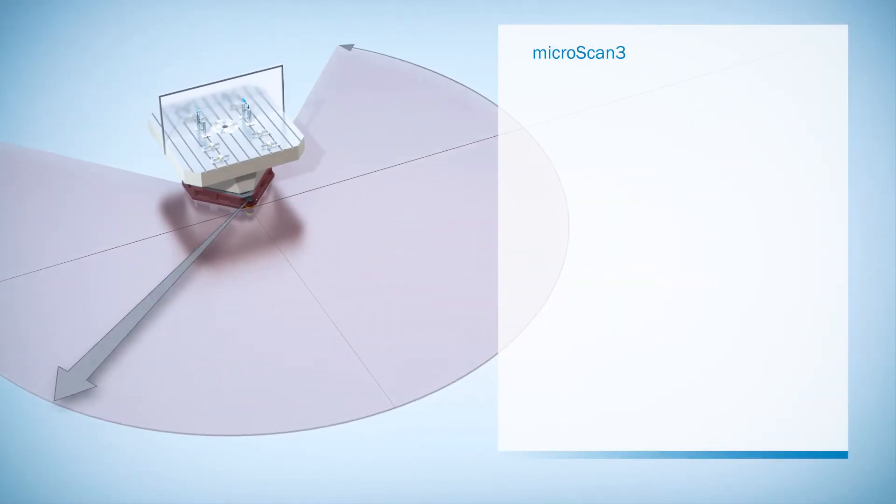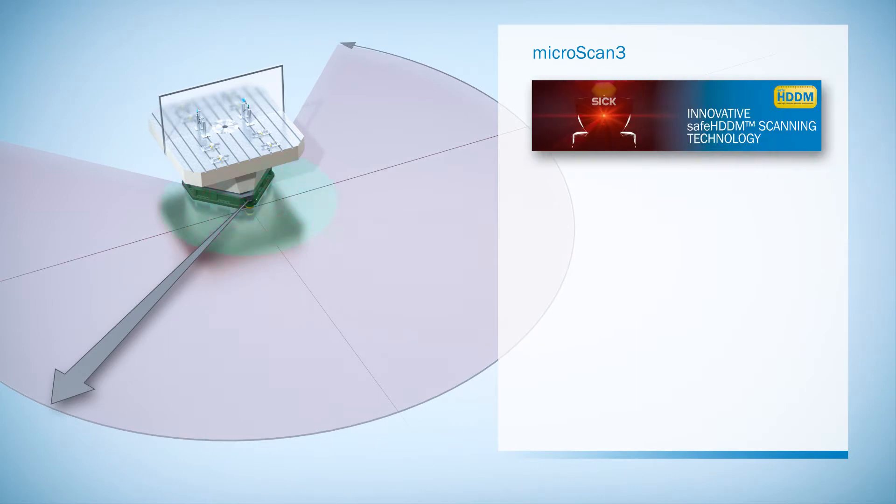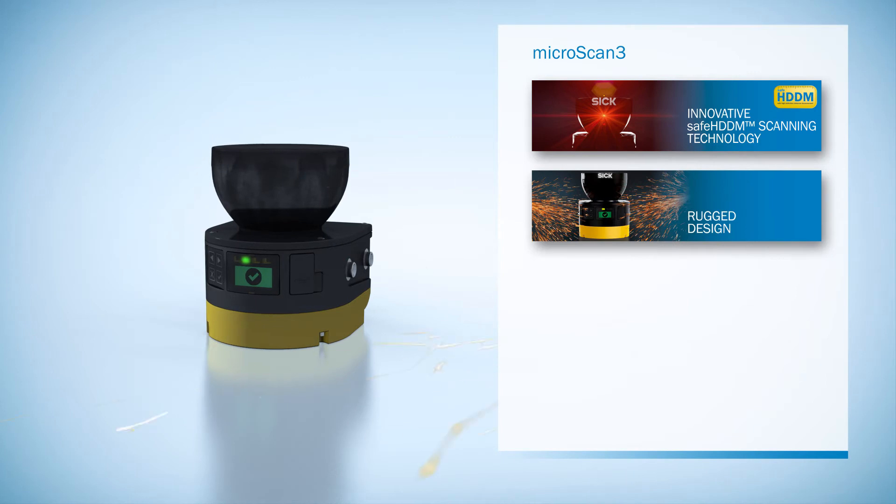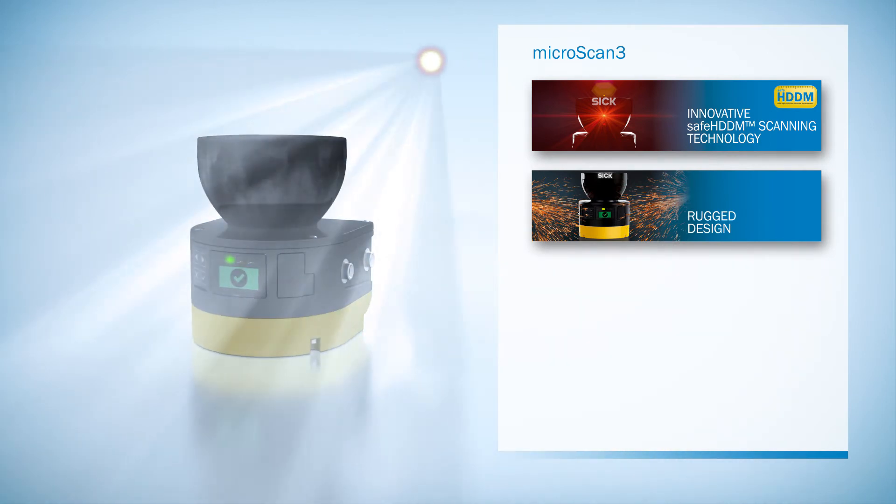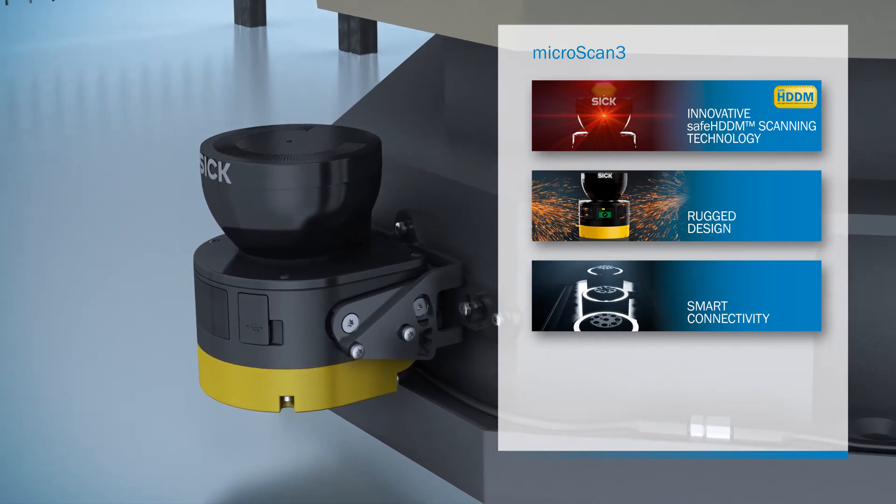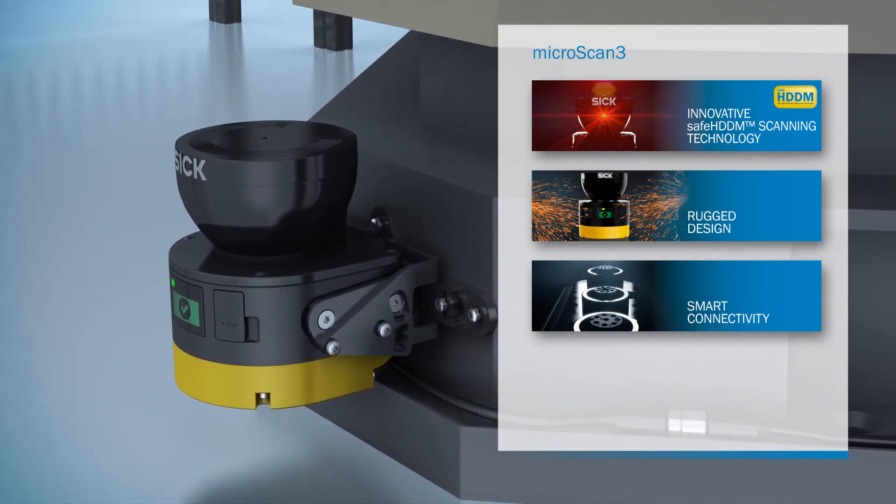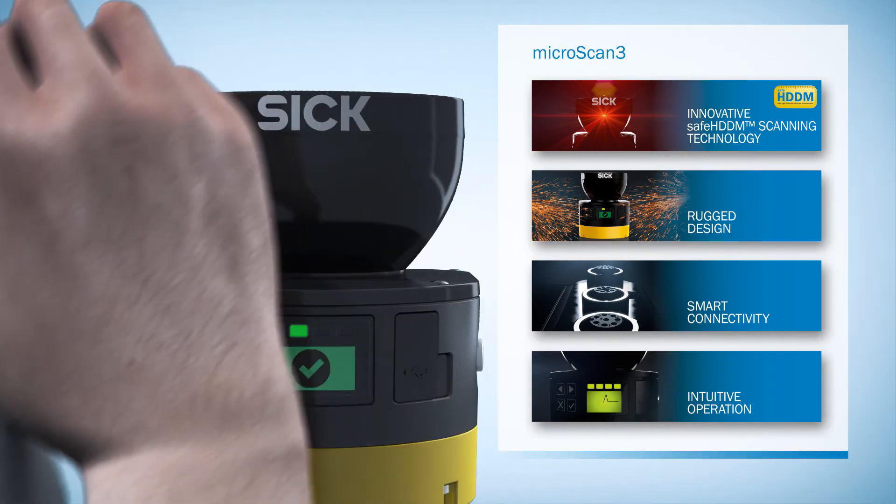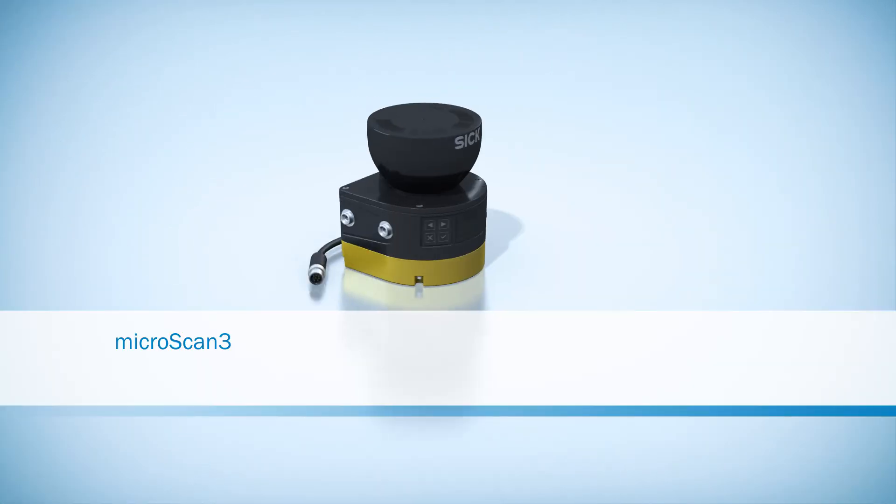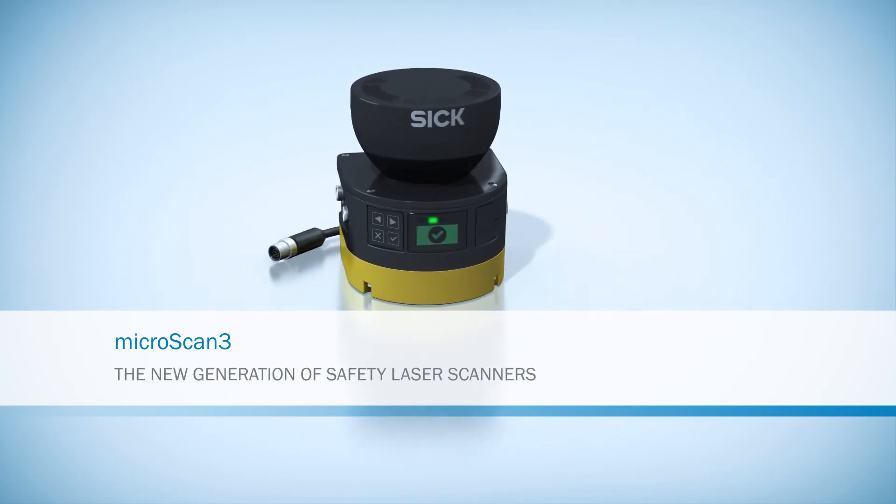MicroScan3, the little scanner with a large viewing area. Even more powerful thanks to innovative SAFE HDDM scan technology. The rugged housing design allows it to be used in challenging ambient conditions. A smart connection concept for cost-efficient machine integration. Intuitive operation for quick commissioning and maintenance. MicroScan3, the new generation of safety laser scanners from SICK.